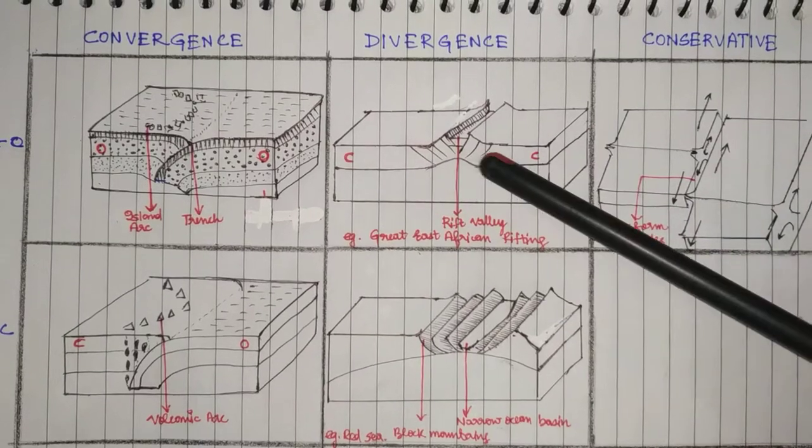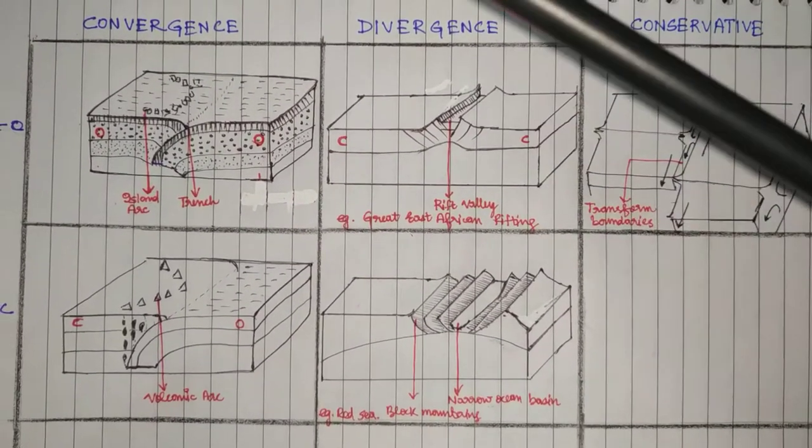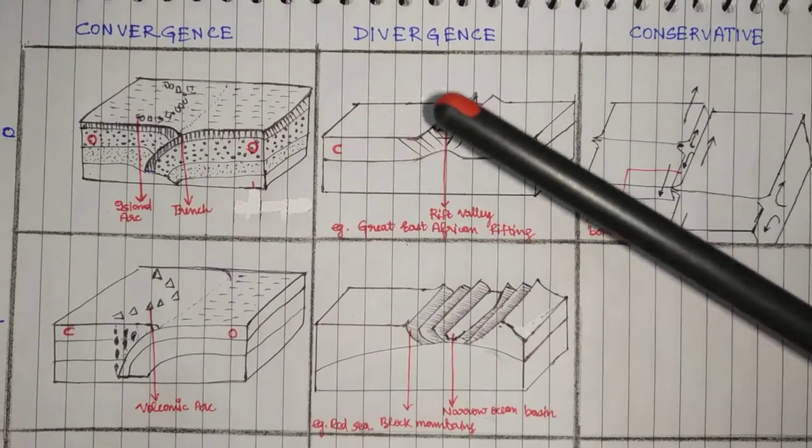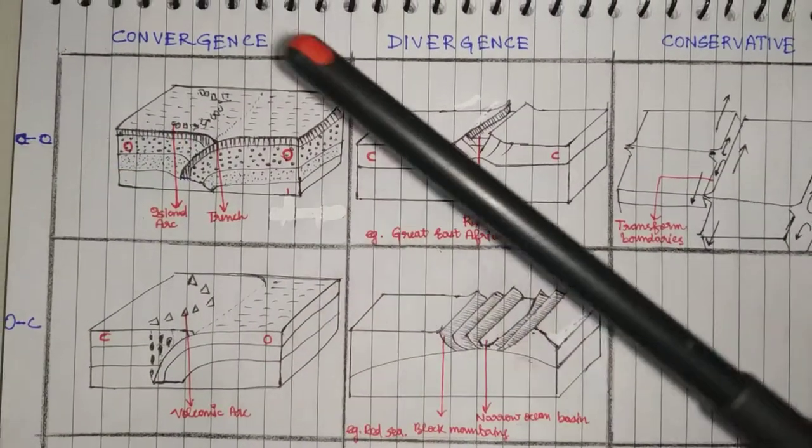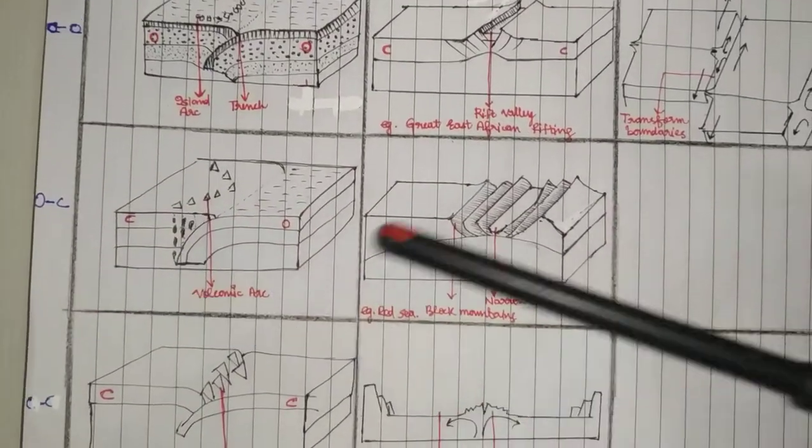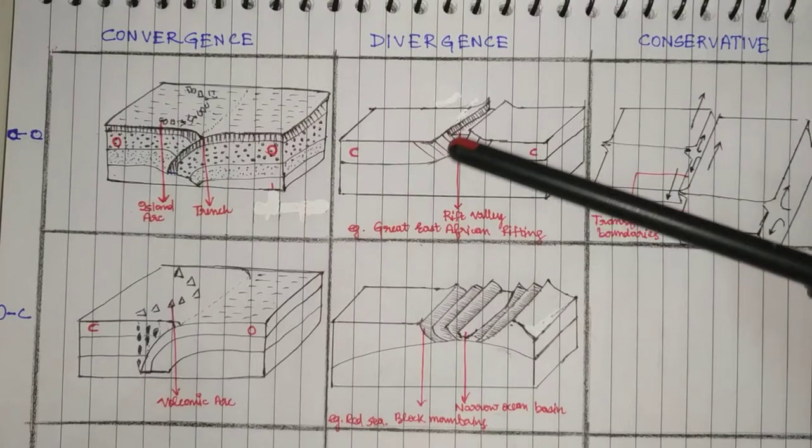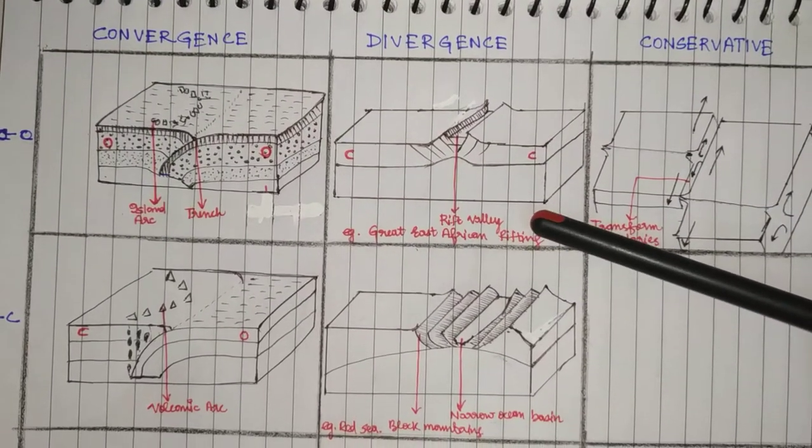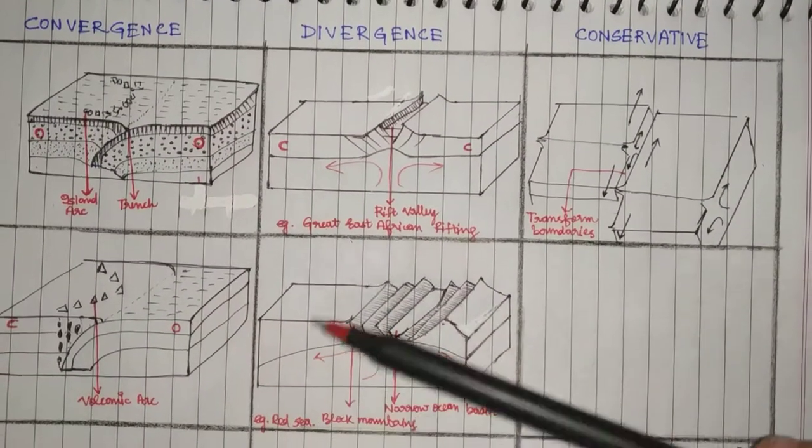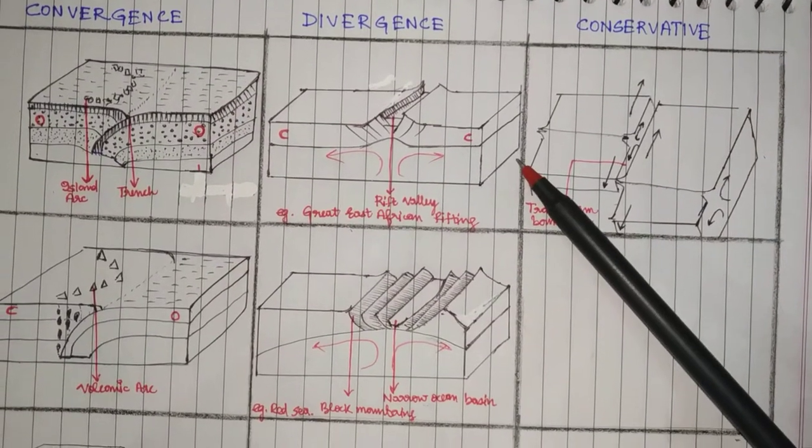If we take the example of continent-continent - by the way, this is not an example of ocean-continent, it's a continuation - first, for example, a rift valley forms because of convection currents. For example, the Great East African rifting.